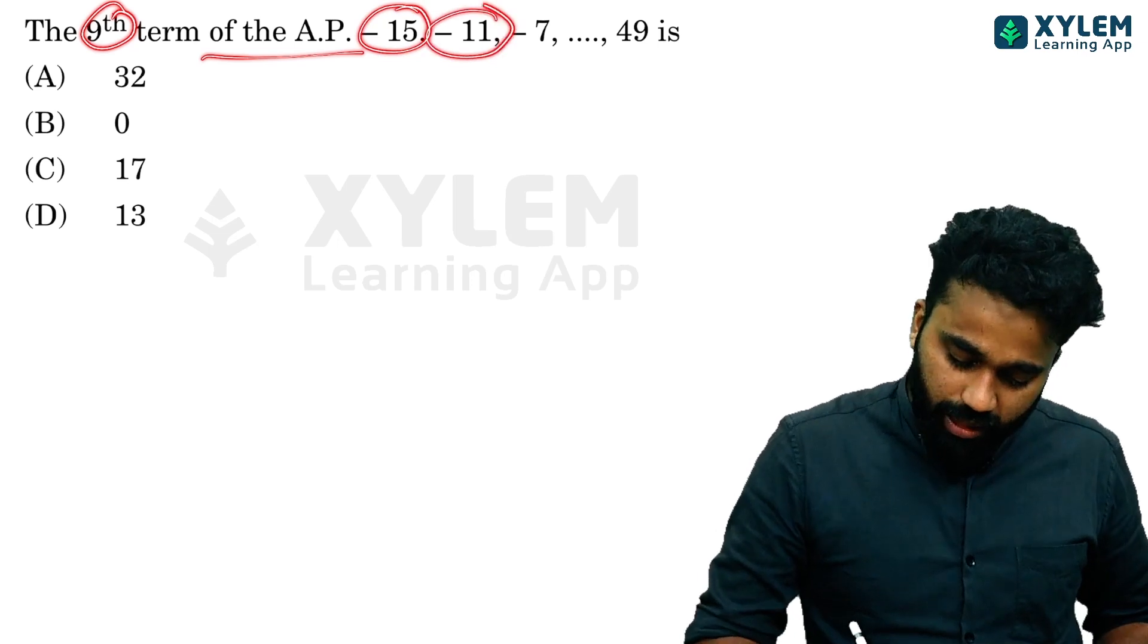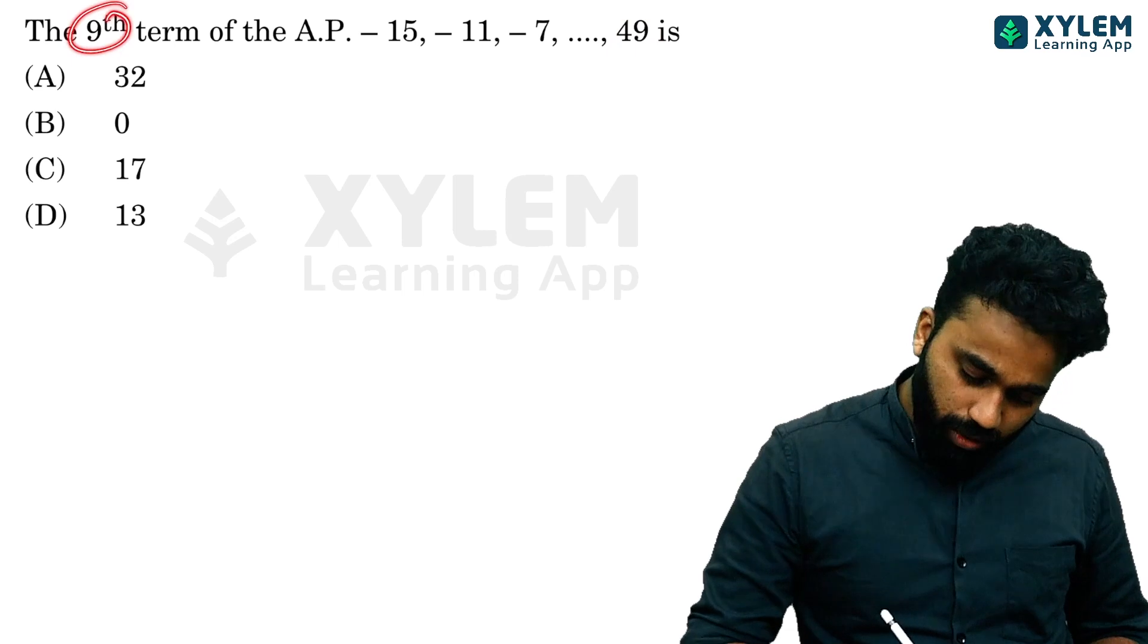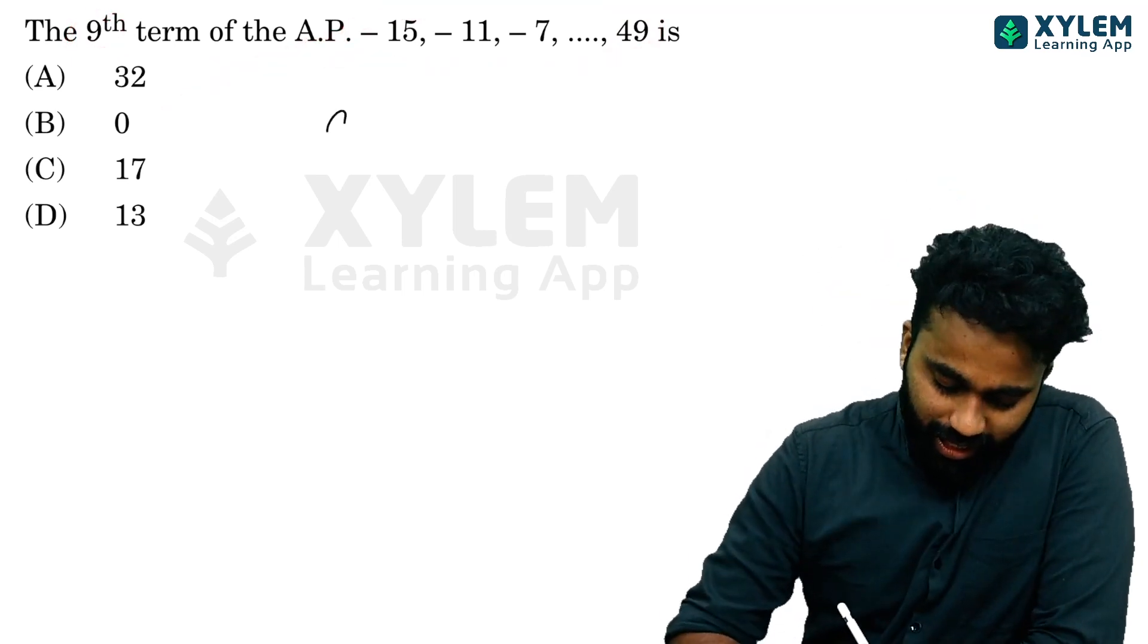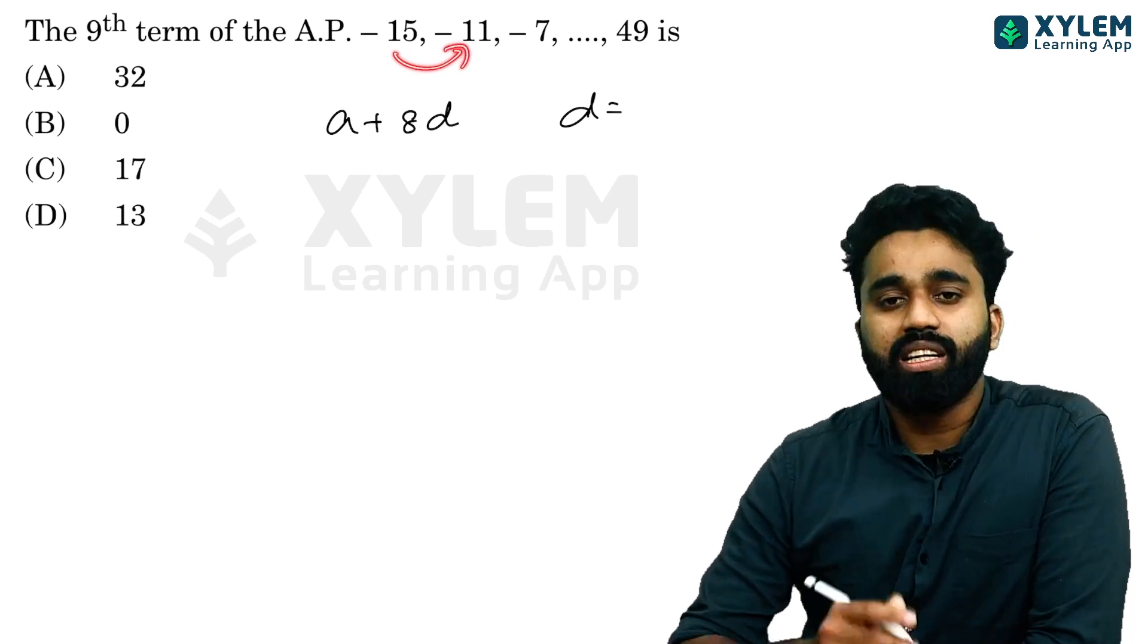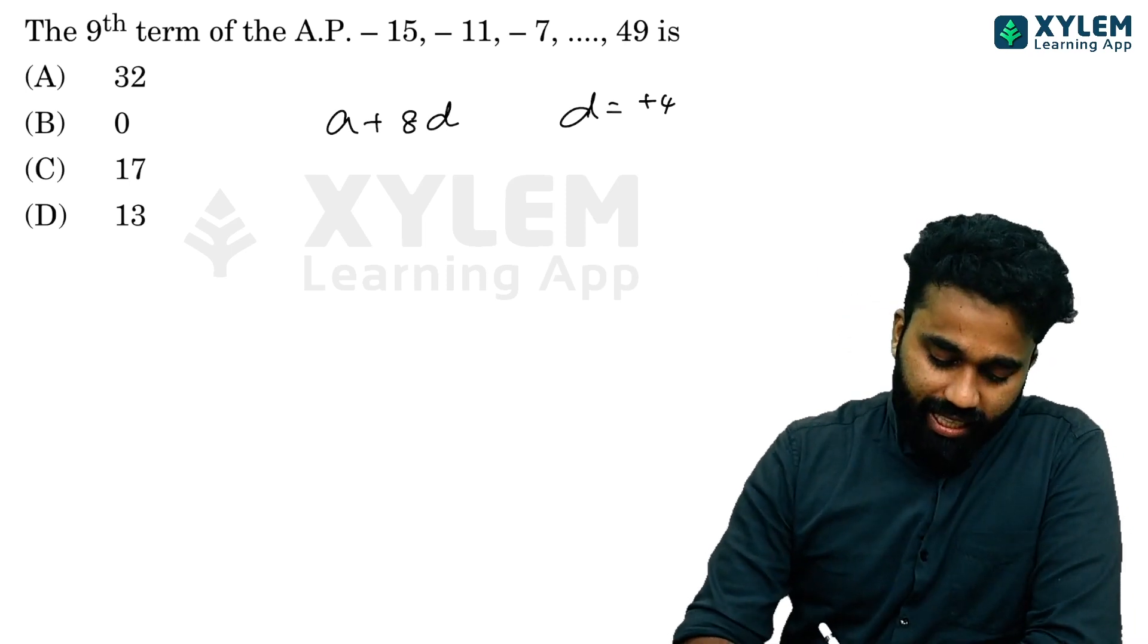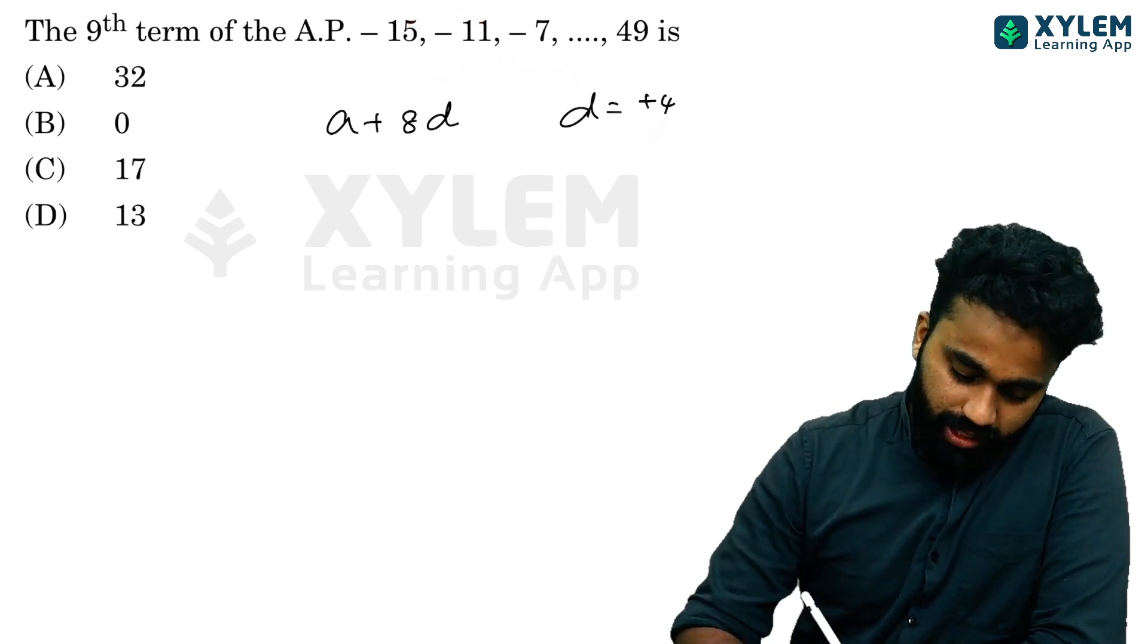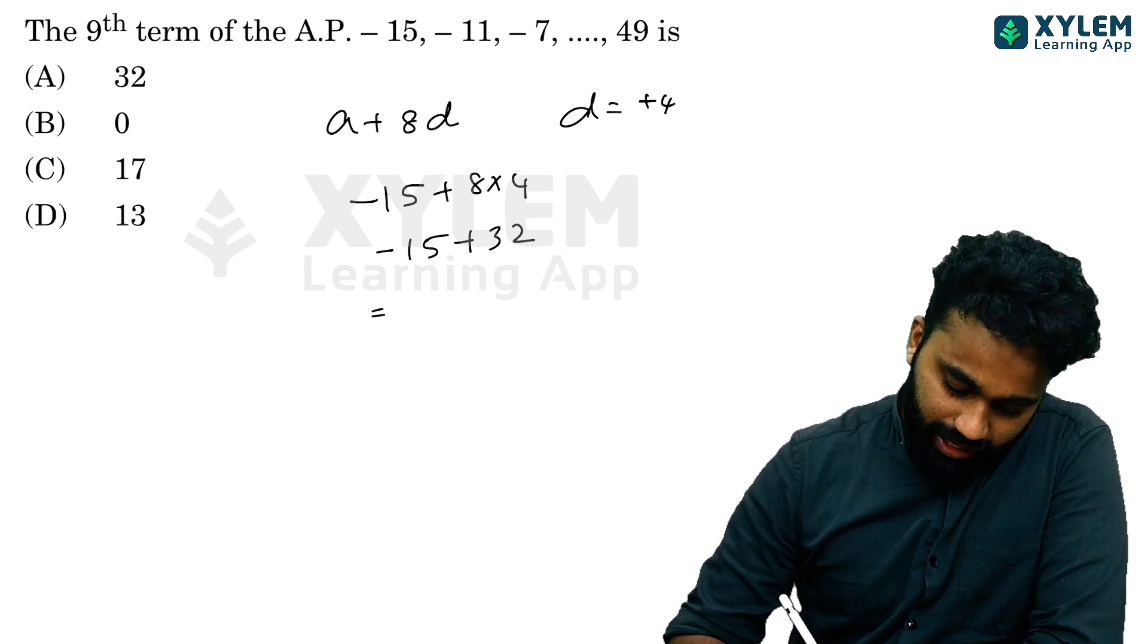The ninth term of the arithmetic progression: the ninth term is a plus 8d. Here the common difference d equals second term minus first term, which is minus 11 minus minus 15 equals 4. So the answer is minus 15 plus 8 times 4 equals minus 15 plus 32 equals 17.